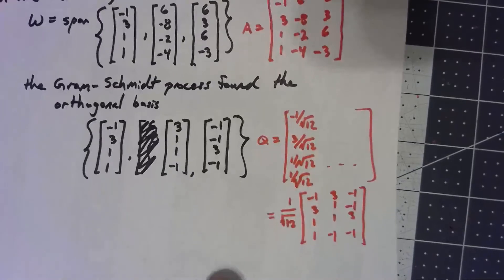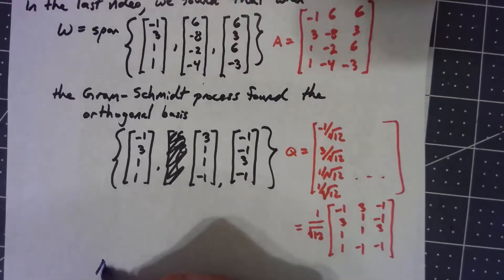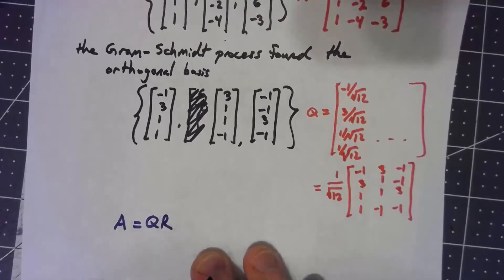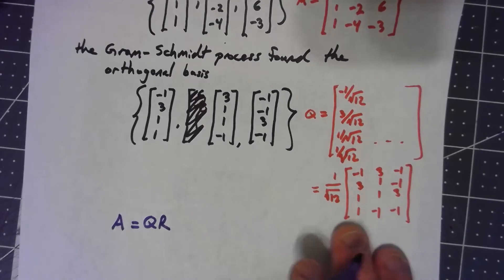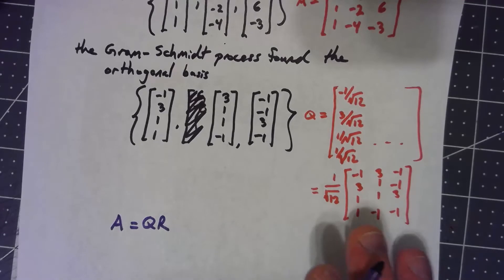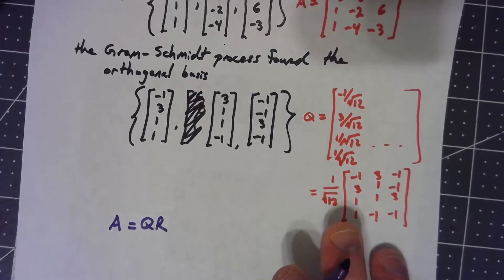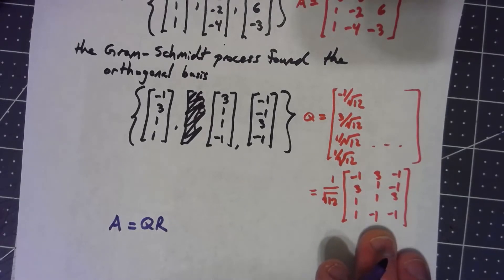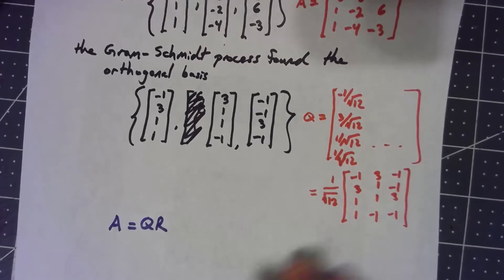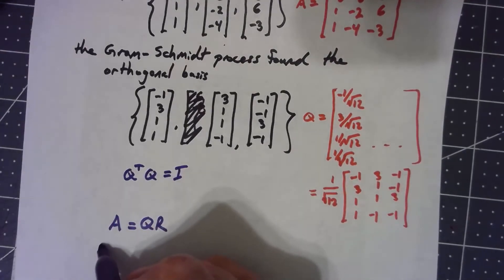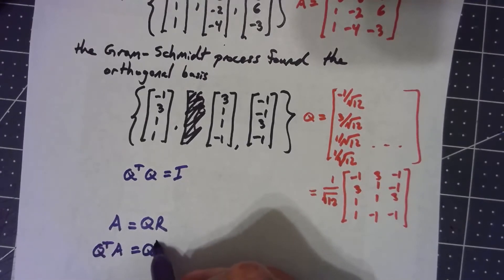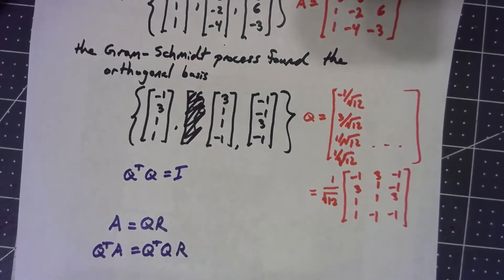I've got my Q, but that's only half of it — I need my R as well. Let's think about this. We have that A equals Q times R, and the columns of Q are orthonormal. When you dot one of these columns with itself you get 1, and when you dot it with something else you get 0. That means Q transpose times Q is the identity. So if I multiply both sides by Q transpose, Q transpose times A has to equal R.